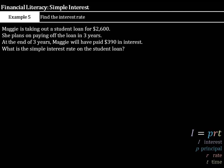As we move on to the last example, Maggie is taking out a student loan for $2,600. She plans on paying off the loan in 3 years. At the end of 3 years, Maggie will have paid $390 in interest. What is the simple interest rate on the student loan? Well, in this last example, we're actually solving not for interest, but for the rate.